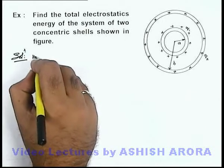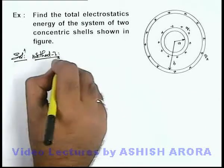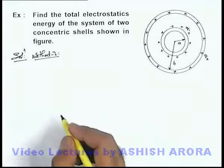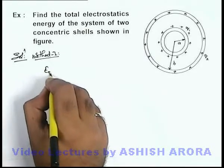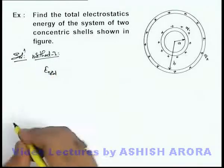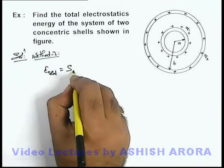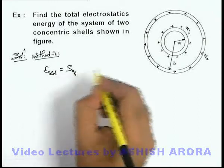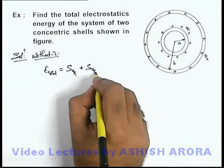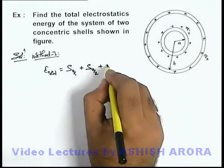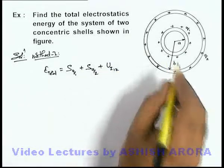Let's use Method 1 first — that is, by summing up all the energies, self as well as interaction. We can write the total electrostatic energy of the system, E_total, as the self energy of the shell having charge q1, plus the self energy of the shell having charge q2, plus the interaction energy of shells 1 and 2.